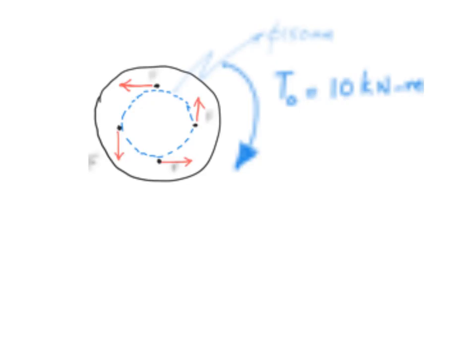Now bringing equilibrium into picture, this T₀ will be equal to the sum of the individual forces. There are four forces, so the moment due to individual forces is the summation. This will be 4 times the force times d/2, because they are acting at the diameter of the PCD.